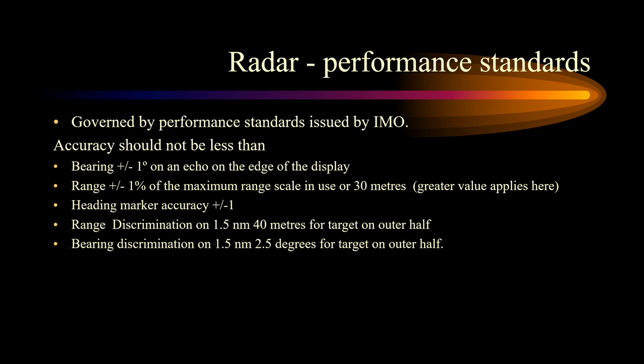Finally, we come to the radar performance standards. These are governed by the IMO resolution. Some examples: there should be at least two radars on vessels of over 10,000 gross tonnage, of which one must be a 3-centimeter radar. The range measurement accuracy for fixed range rings and variable range markers should be at least 1% of the maximum range scale in use or 30 meters, whichever is greater. The range accuracy should be plus or minus 1% of the maximum range scale in use or 30 meters, whichever is greater.